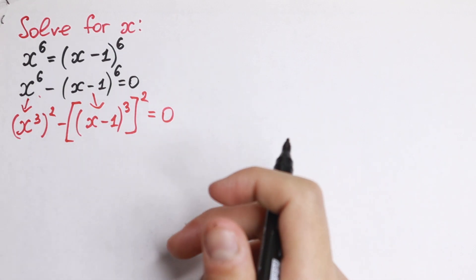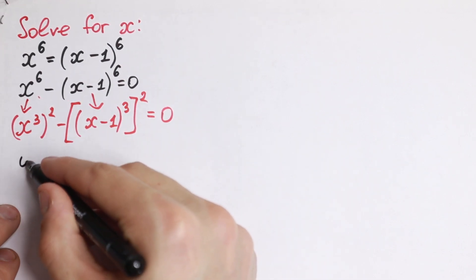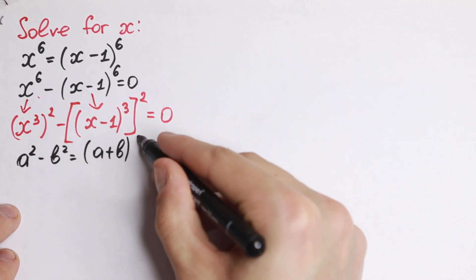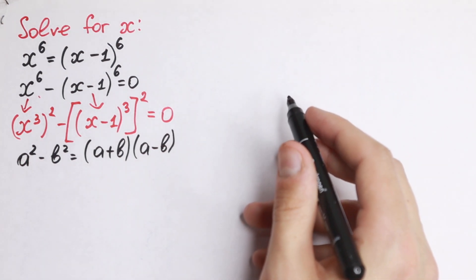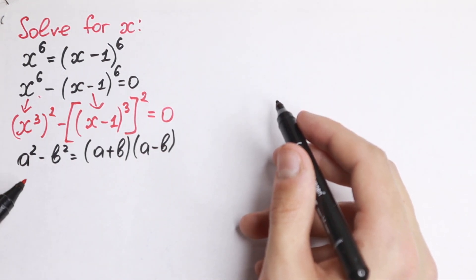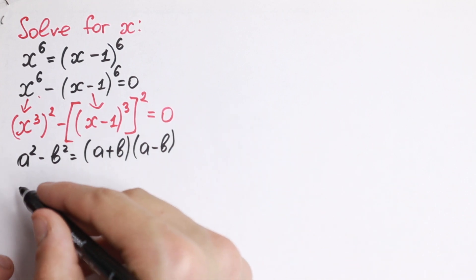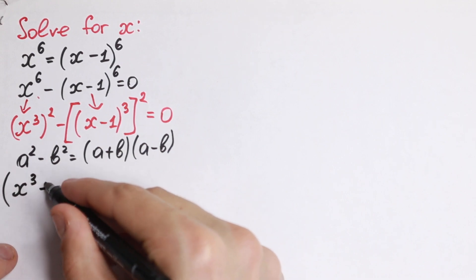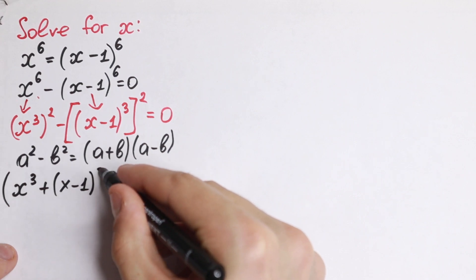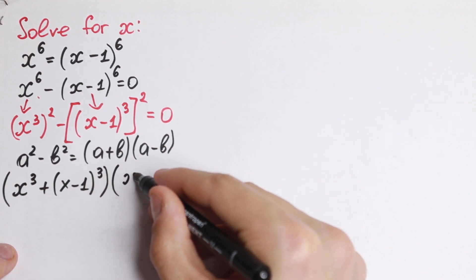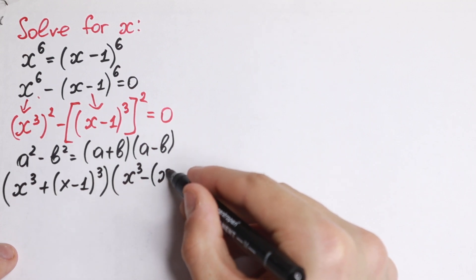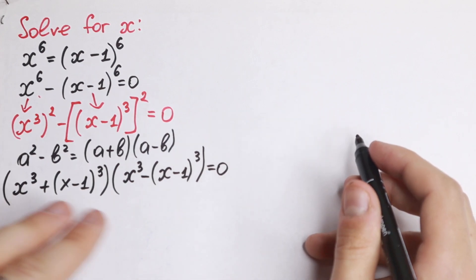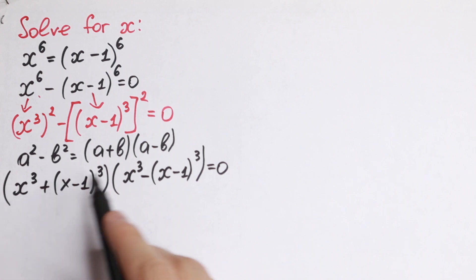Right now I'm going to apply an identity formula: a squared minus b squared equals a plus b times a minus b. We have a difference of two squares, so let's apply this. We get x cubed plus x minus 1 cubed, times x cubed minus x minus 1 cubed, equals zero.